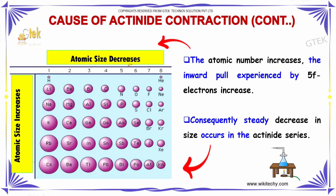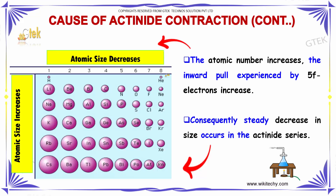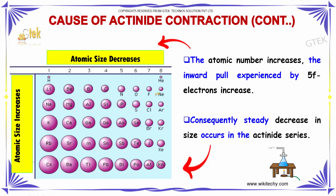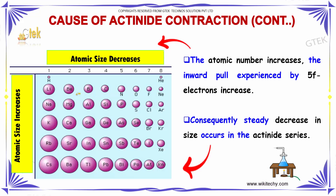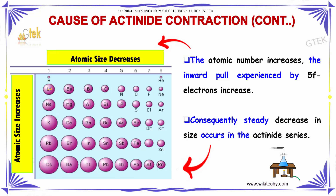The causes of atomic actinide contraction: the atomic radii increase in the inverse pull experienced by 5f electrons increases. Consequently, a steady decrease in size occurs in the actinide series.